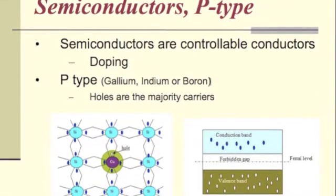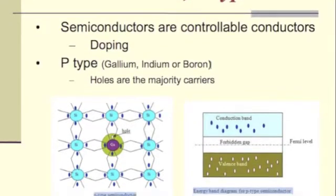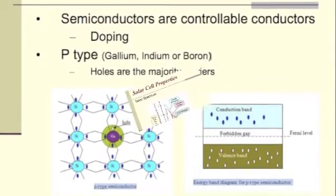Adding gallium, indium, or boron to silicon produces a P-type semiconductor material with extra holes in the outermost shell that can receive electrons.